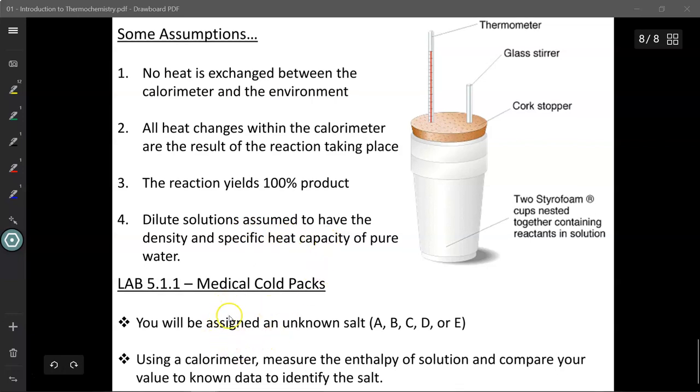Now, down here is where we would normally do a lab. Essentially, we would have five unknown salts and each salt would then be dissolved inside a calorimeter. We would then measure the temperature change for the dissolution process and using Q equals MC delta T to determine the amount of energy involved with that dissolution.